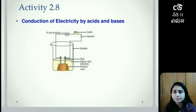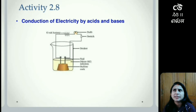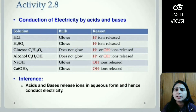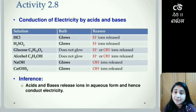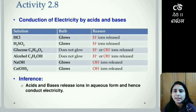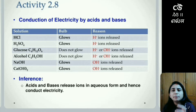Here we will be using dilute HCl, and as a base we can use sodium hydroxide. Acids and bases release ions in aqueous form and hence they will be conducting electricity. When any acid or base gets dissolved in water, we check whether a bulb glows or not, to verify if electricity conduction is happening.